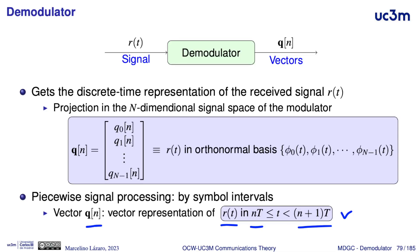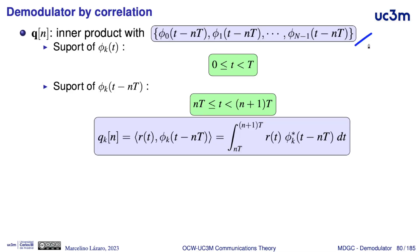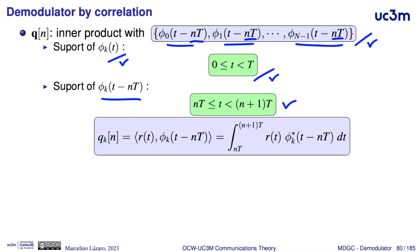To obtain this vector representation, it is necessary to compute the inner product between the received signal and the n elements of the orthonormal basis, but delayed n times the symbol duration T. This is because the support of the elements of the basis is from zero to capital T, and we need to process the signal in the symbol intervals of index n, so it is necessary to shift the elements of the basis — the functions phi_k — to be in this interval.